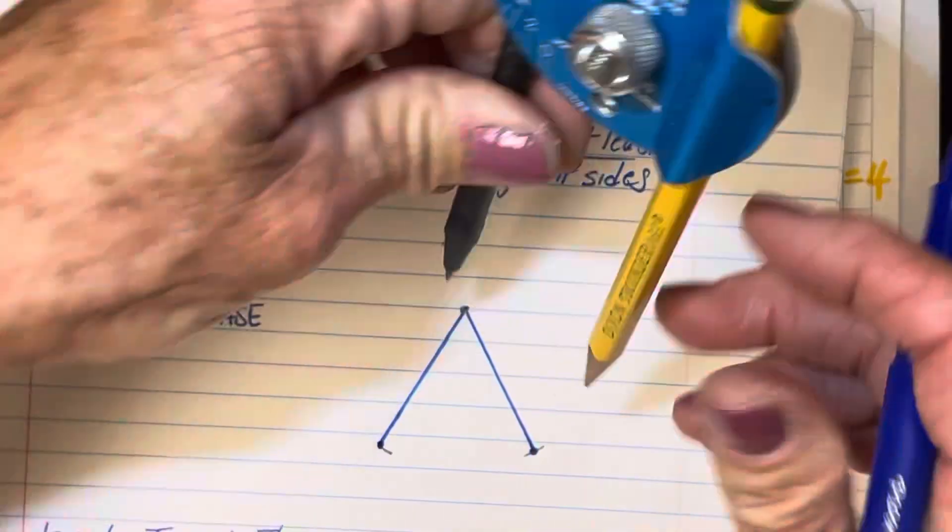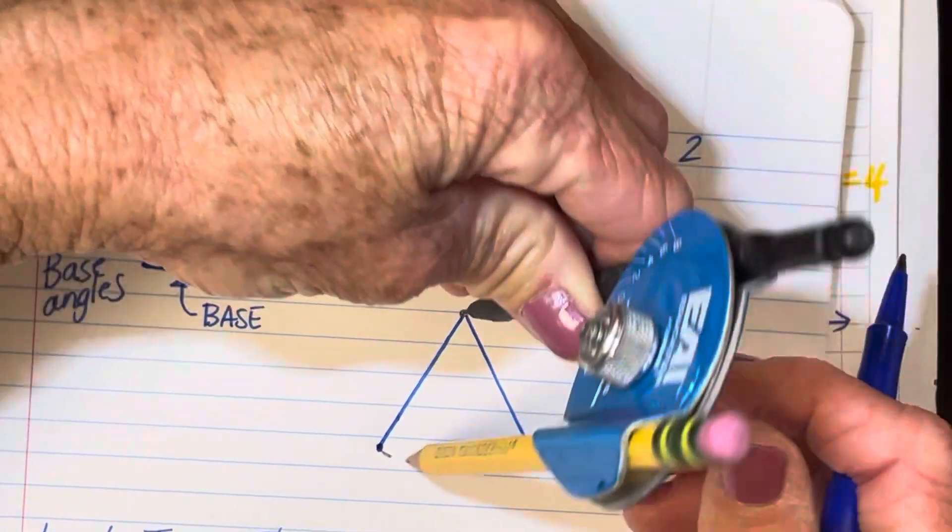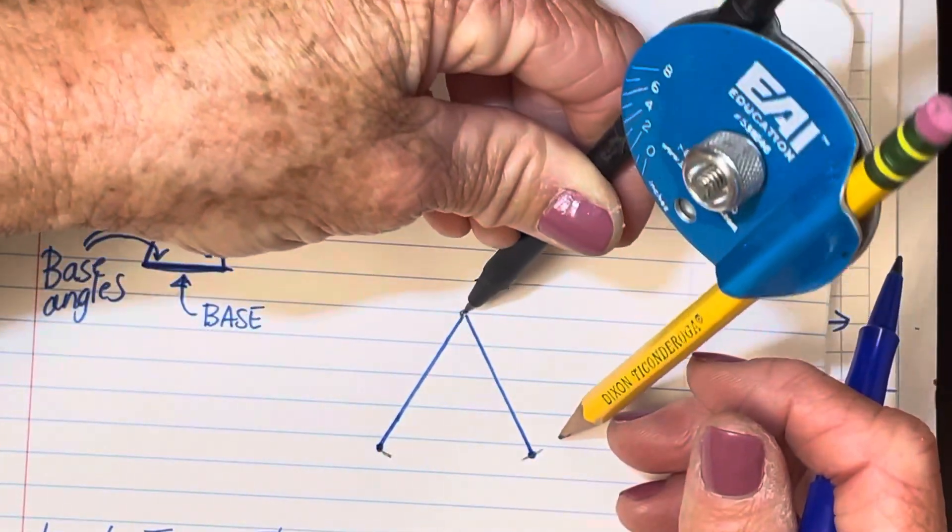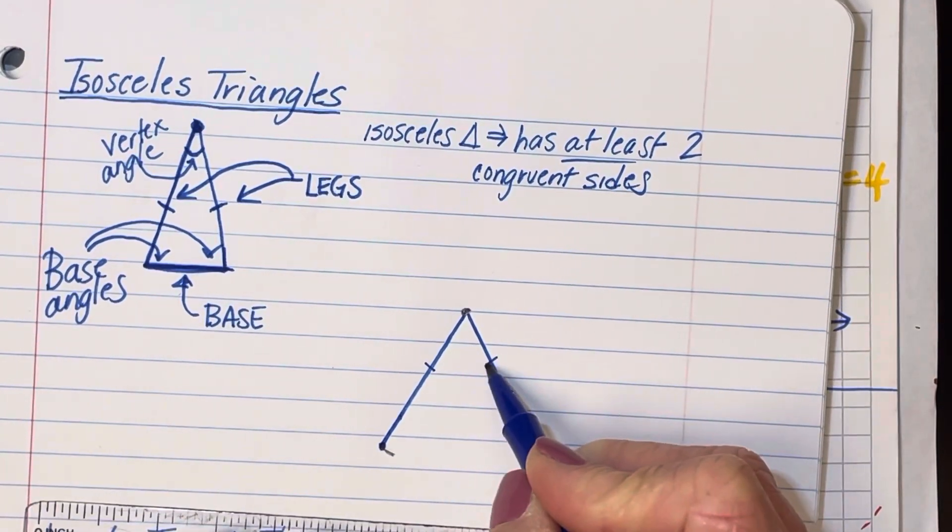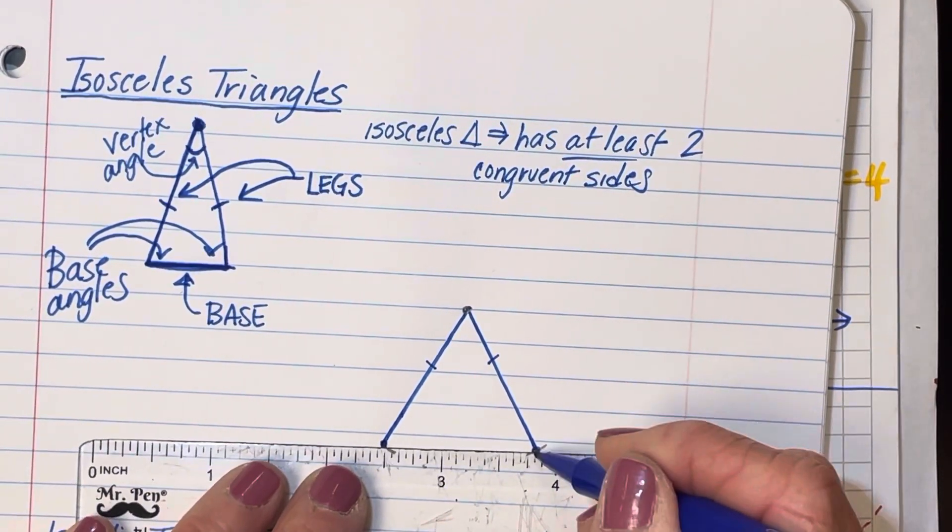Because I used my compass to construct those two segments, they're equal in length. So these would be the legs, these are the legs, and then this is the base of my triangle.